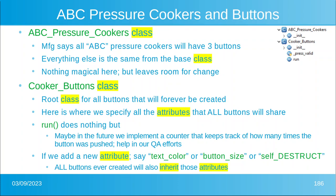Maybe we're also going to create a toaster for these people. The root class is cooker buttons, although maybe it should be called appliance buttons. But here's where we specify all the attributes that all buttons forever and ever will share. You notice that run does absolutely nothing. But maybe in the future we implement a counter that keeps track of how many times the button was pushed — that way you can tell the user it's time to clean the filter or some such thing.